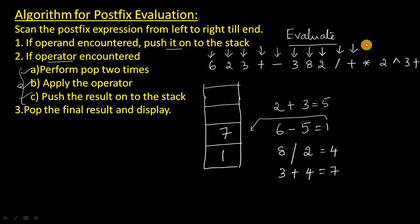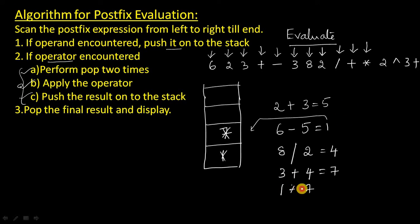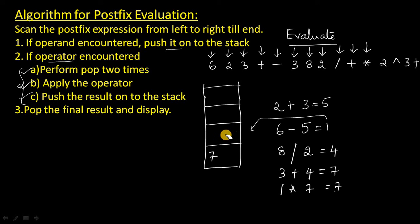And next one is multiplication — that is an operator. So pop this 7 from the stack and pop this 1 also from the stack, and apply this operator. So the result will be 7 again. Push this result onto the stack — you will get a 7 here. Erase those two values; 1 and 7 will be deleted.